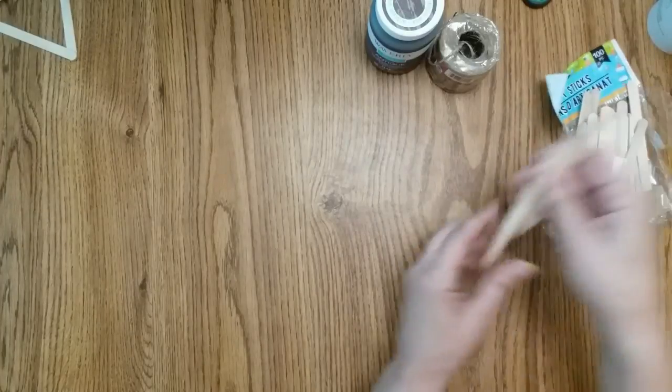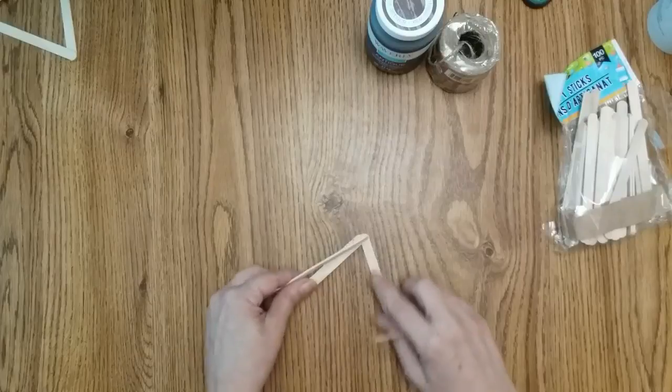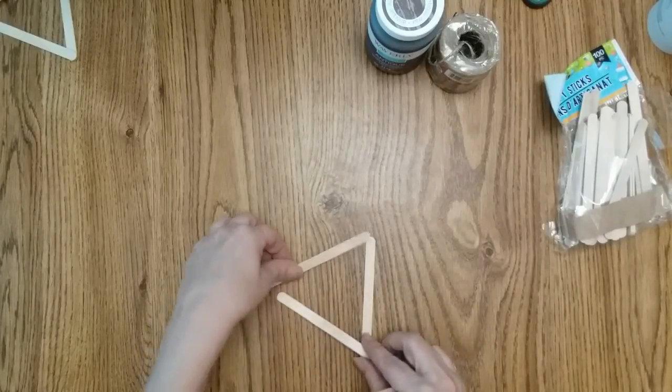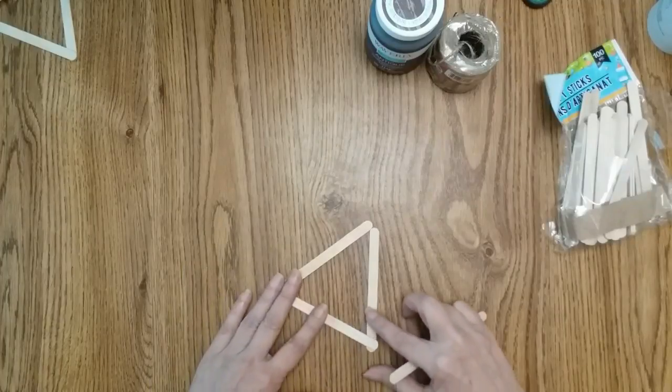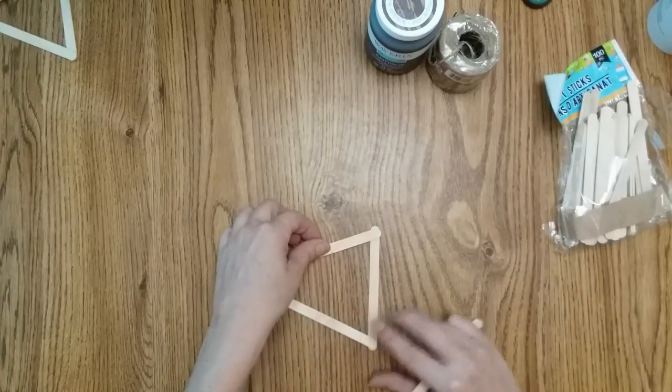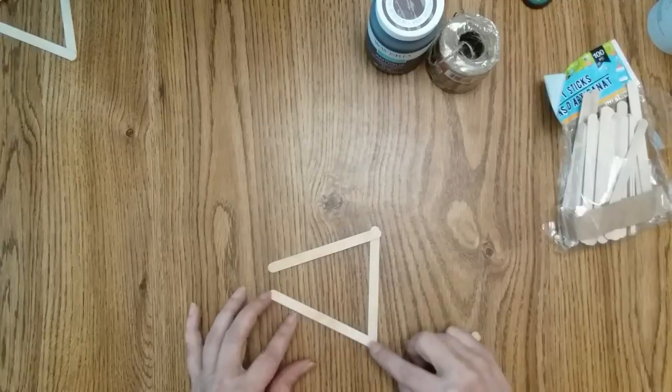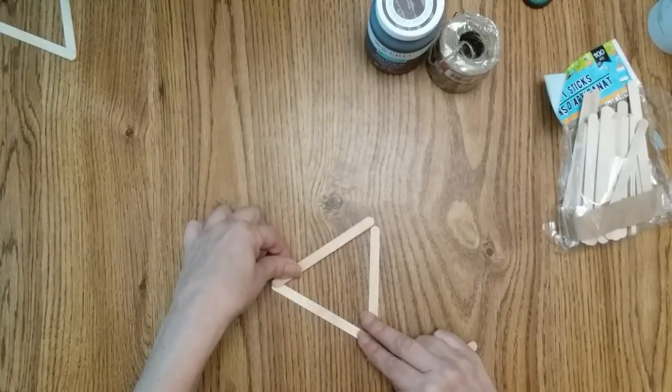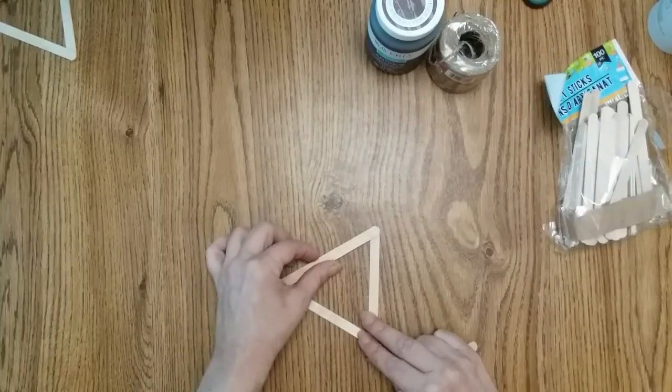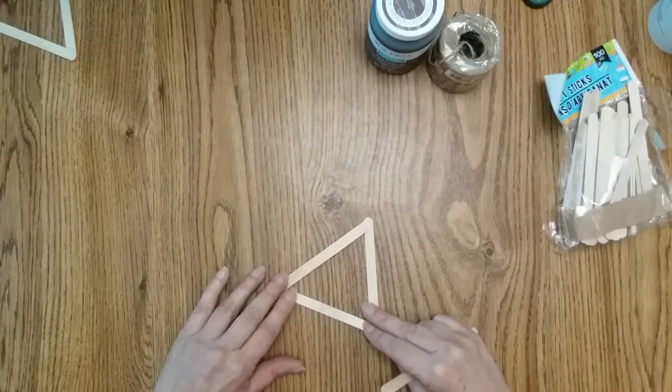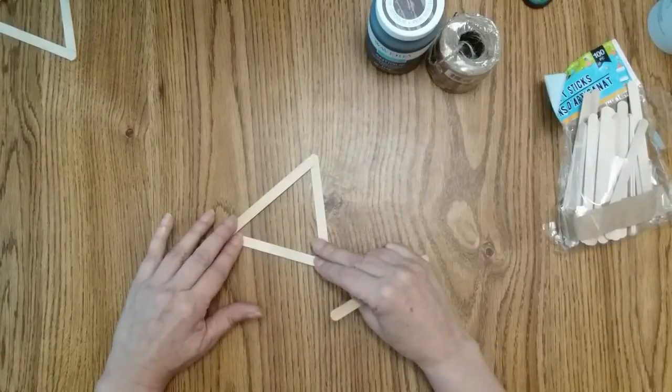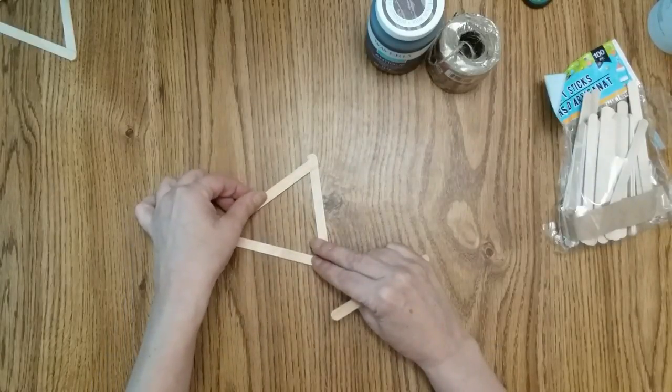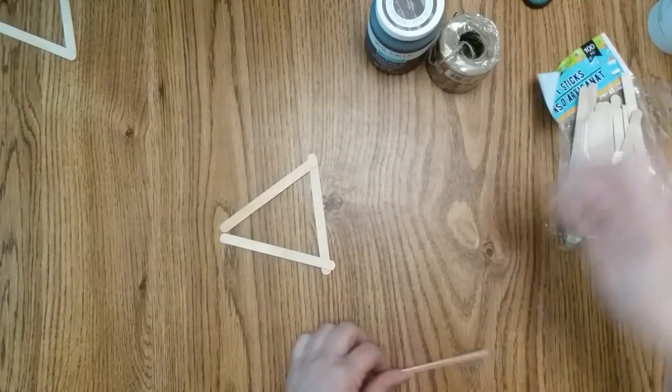First thing you want to do is take three sticks and glue them into a triangle. You want them to overlap. So this edge is on top of this, this edge is on top of this, and then this edge is on top of that. You want to glue that like that and set it up. Hot glue is a lot faster, but I want it to last a while. So I am going to do mine with Elmer's wood glue.